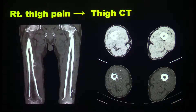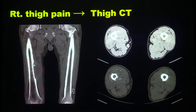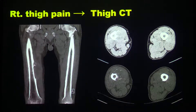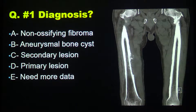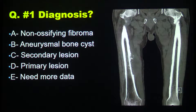In his CT scan, as you can see, there's a large lytic lesion with a soft tissue component, and maybe another clue that you'll be able to decipher later. Diagnostic possibilities based on the data we have — need more data.